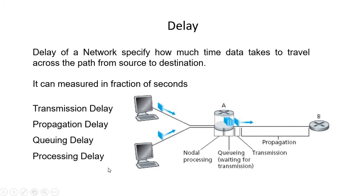Whenever we measure the total time, we must consider all four parameters: transmission delay, propagation delay, queuing delay, and processing delay. The summation of these four gives the total travel time — the total time taken by data packets to travel from sender to receiver. This is known as total nodal delay.